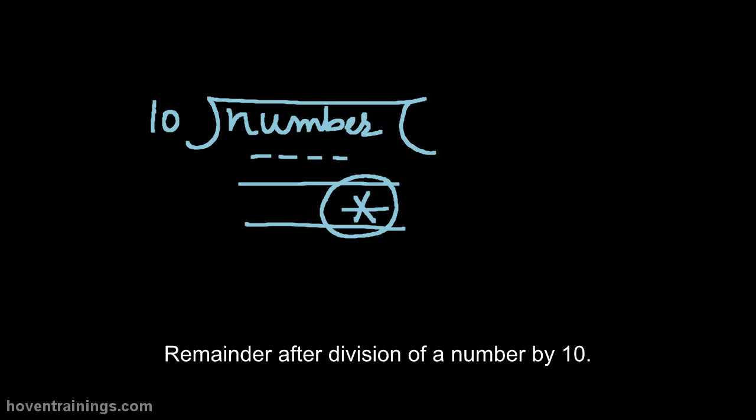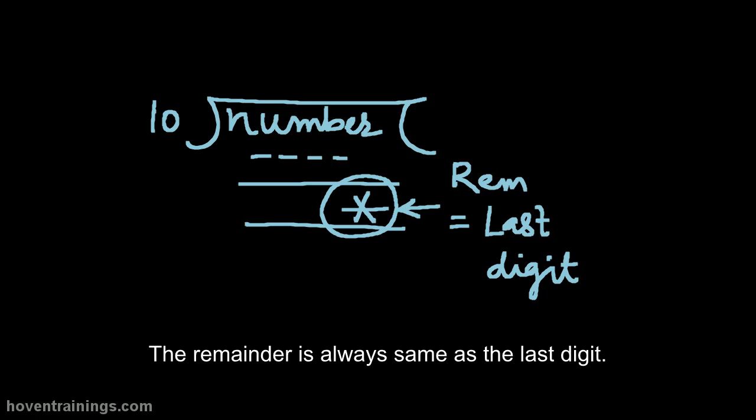Remainder after division of a number by 10. The remainder is always same as the last digit.